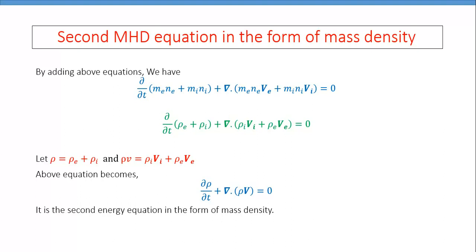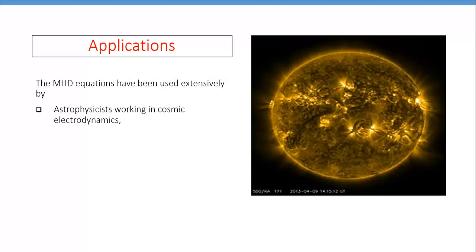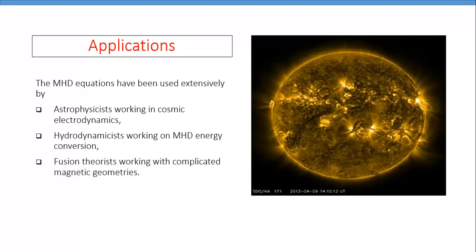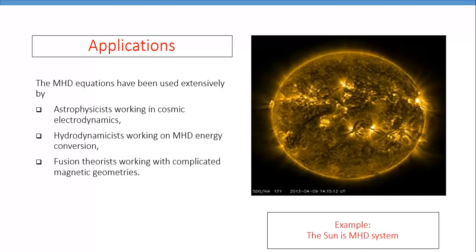In the next lecture, we will derive the third and fourth MHD equations. Speaking generally about the applications of the MHD equations: the Sun is an example of an MHD system. Applications include astrophysicists working in cosmic electrodynamics, people working with MHD energy conservation, and fusion theorists working with complicated magnetic geometries — all of whom make use of the MHD or one-fluid set of equations. Good luck with your learning.